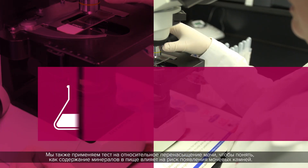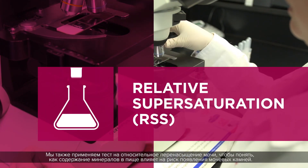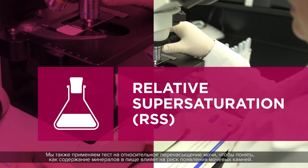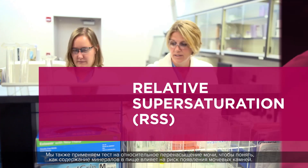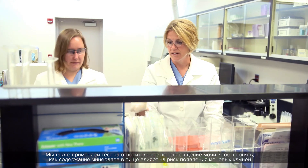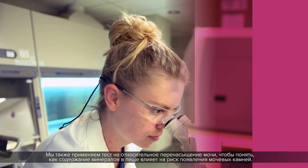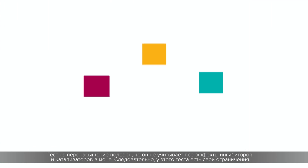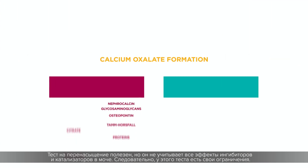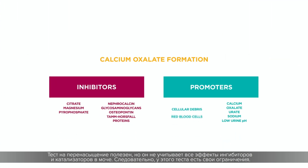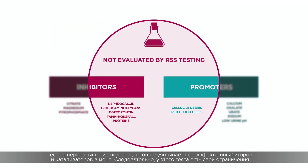We also use RSS, or relative supersaturation testing, on urine to help understand how mineral content in food influences stone risk. RSS is a useful test, but it doesn't account for all of the effects of the inhibitors and promoters in urine. Therefore the test has its limitations.